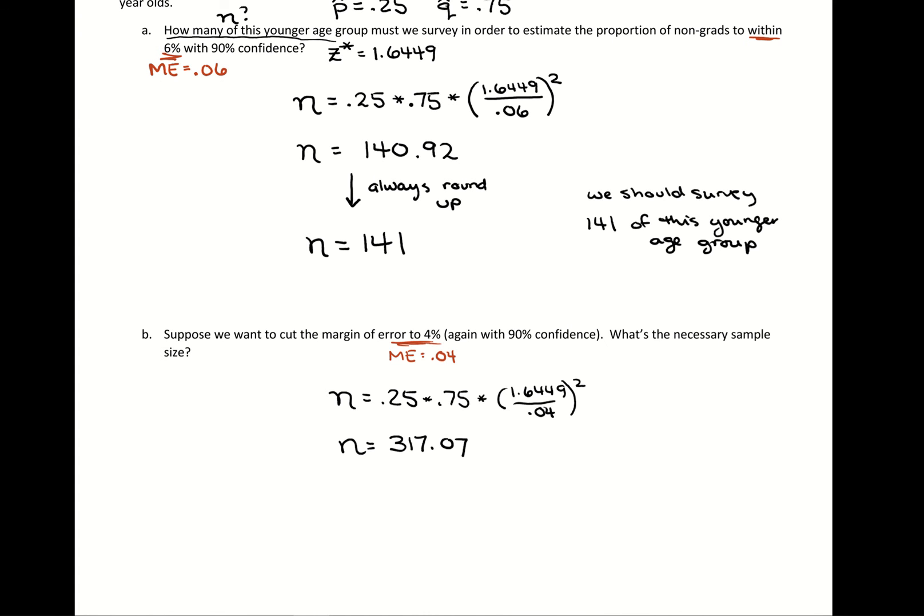So if we compare taking a sample of 20 people to a sample of 200 people, any values that I collect from that sample of 20 people is going to have a lot of error involved. Whereas if I have a sample of 200 people, I can trust those values more.